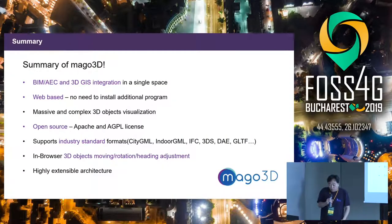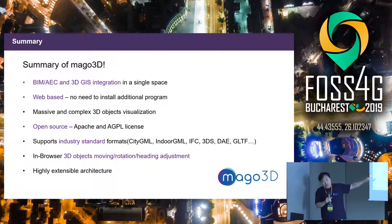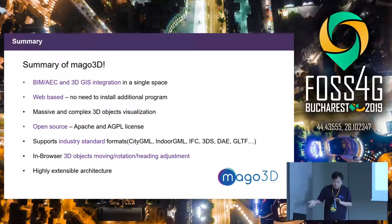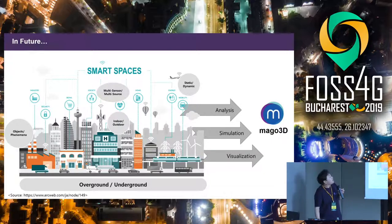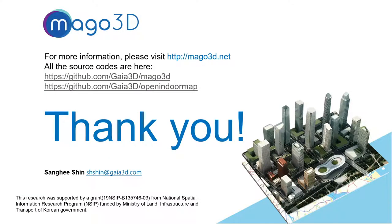In summary: Mago 3D integrates building information modeling and 3D GIS, is web-based, and is very good at visualizing complex and large-sized objects like CAD and BIM. It is purely open source and supports industry standards. In your web browser you can rotate, move, and adjust the heading of 3D objects. All source codes are available — please visit, download, learn, and test. One downside is that many materials are in Korean or Japanese, with only some in English. I invite all of you to help translate our materials into your language.